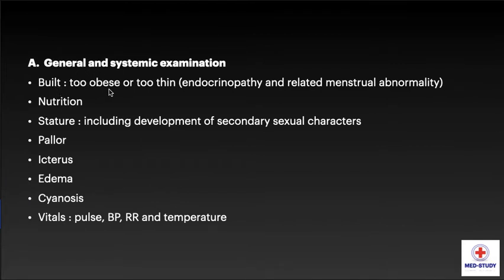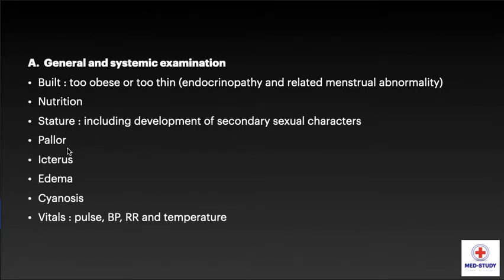In general examination, we have to look for the build — too obese or too thin relates to endocrinopathy and related menstrual abnormality — nutrition, stature including development of secondary sexual characteristics, pallor, icterus, cyanosis, edema, clubbing, and vitals including pulse, blood pressure, respiratory rate, and temperature.